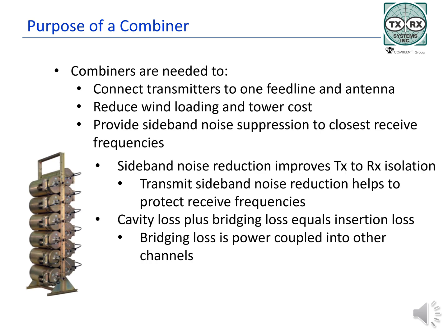Combiners are used at communication sites to connect multiple transmitters to one feed line and one antenna. This helps reduce tower loading and the impact of wind on the tower and equipment mounted on it. Many towers are loaded, supporting all the antennas and feed line that they can under local wind conditions. TXRX Systems designs and builds combiners, which put the output of multiple transmitters onto one feed line going to one antenna. A combiner also acts as a filter to reduce unwanted transmitter noise.